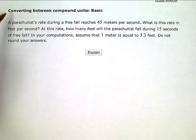Converting between compound units, basic. So I have this problem here. It says a parachutist's rate during a free fall reaches 45 meters per second. What is this rate in feet per second?